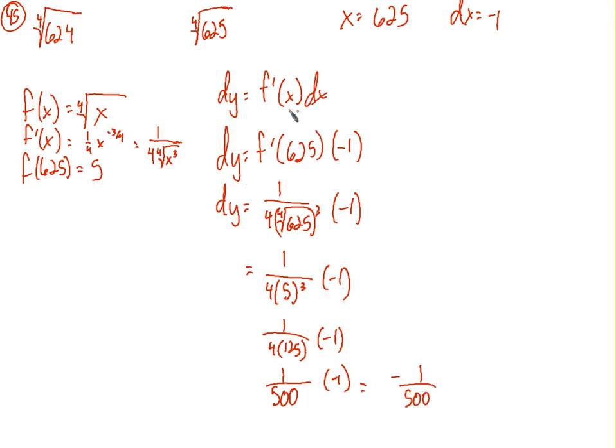Okay, so what is that? That's the approximated change in the y value of this function between an x of 625 and an x of 624. So, our 4th root of 625, we're saying that if we subtract 1 over 500 from that, we should get the 4th root of 624. And the 4th root of 625 and 624 are going to be really close. We're approximating that they're going to be this close to each other.